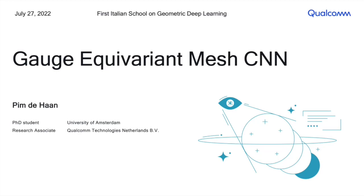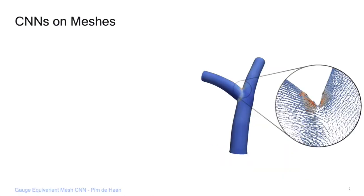Hello everyone. This talk will be very similar to Maurice's talk but much more concrete. Rather than talking about Riemannian manifolds and smooth things with nice bundles, we think about everything discrete. We're going to discretize the manifolds on meshes and show how we get something like a graph CNN as an instantiation of a coordinate-free convolutional neural network — we call that the gauge equivariant CNN.